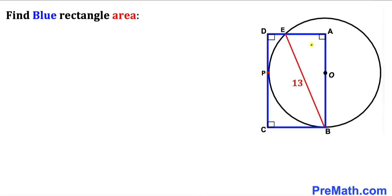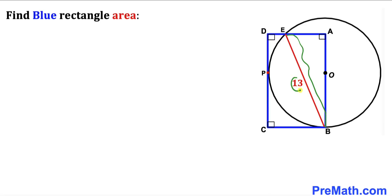In this video we have a blue rectangle ABCD and a circle with center O, such that one side of the rectangle is tangent to the circle at point P, whereas the other side of the rectangle passes through center O. Moreover, segment EB is 13 units, and our task is to calculate the area of blue rectangle ABCD.